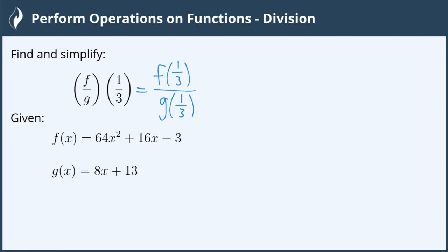In a previous video, the one for multiplication, we found that f of 1/3 comes out to be 85 over 9, and g of 1/3 comes out to be 47 over 3. To find those, we just plugged 1/3 in for the x.